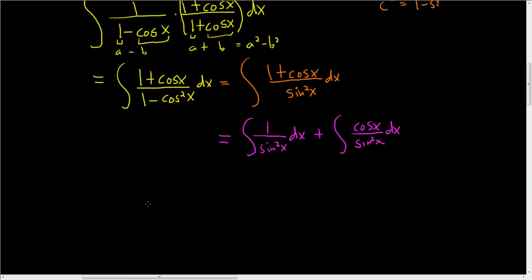And now it seems that maybe we can rewrite this in terms of familiar trig functions. So 1 over sine is cosecant. So this is cosecant squared x dx.